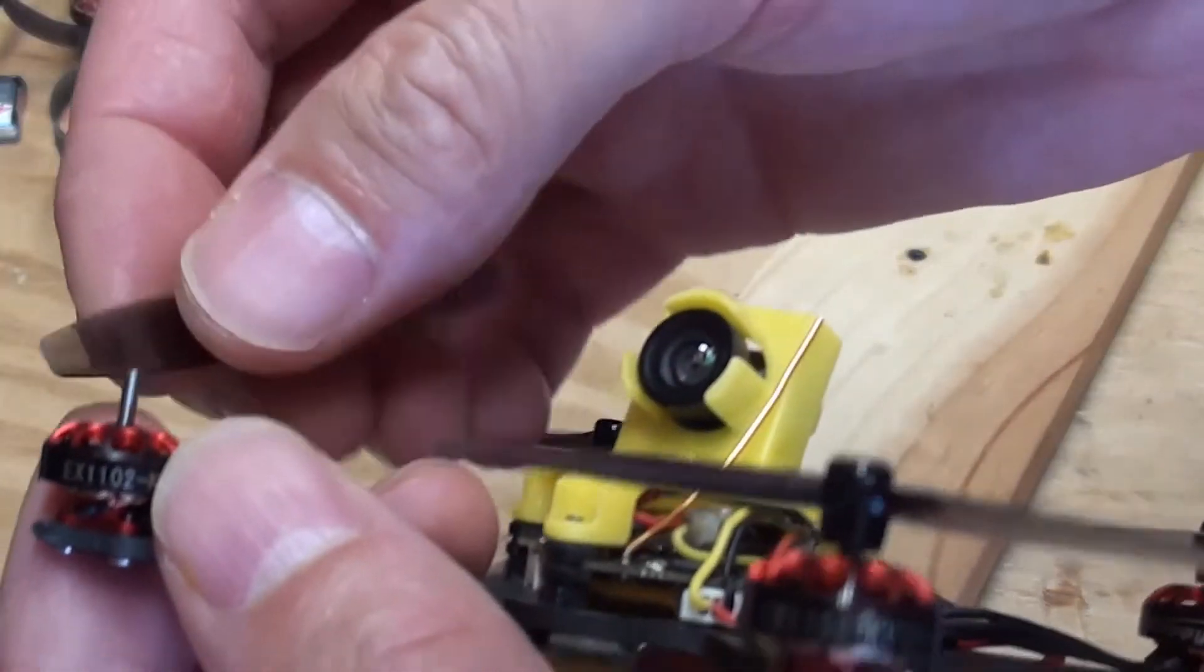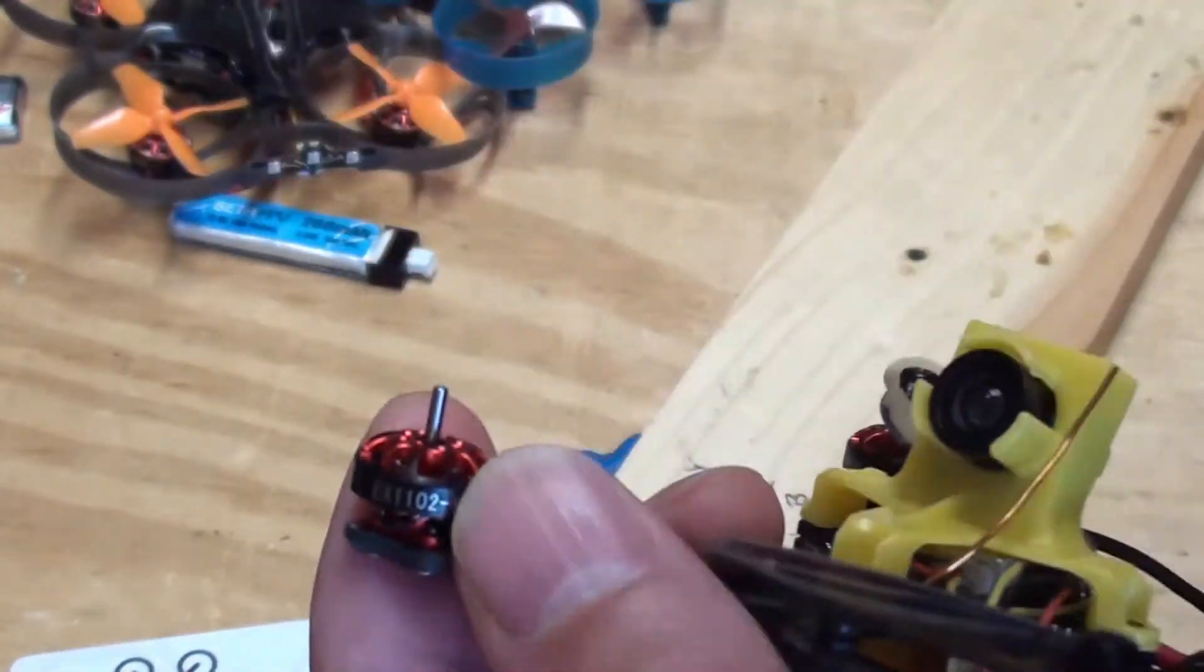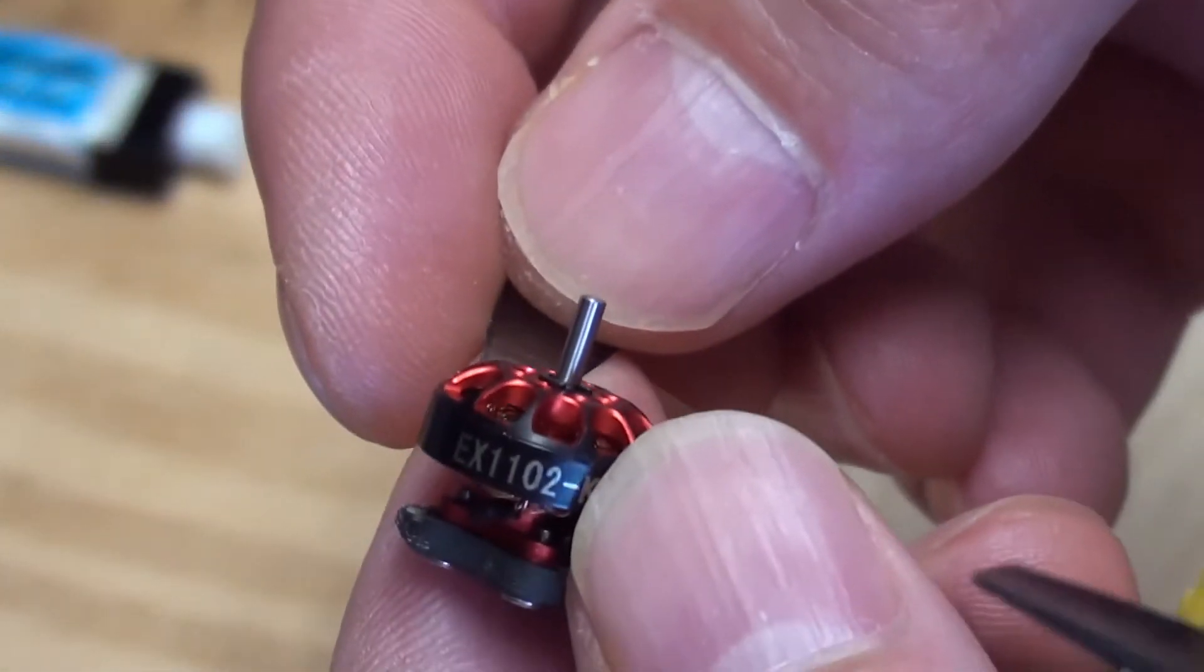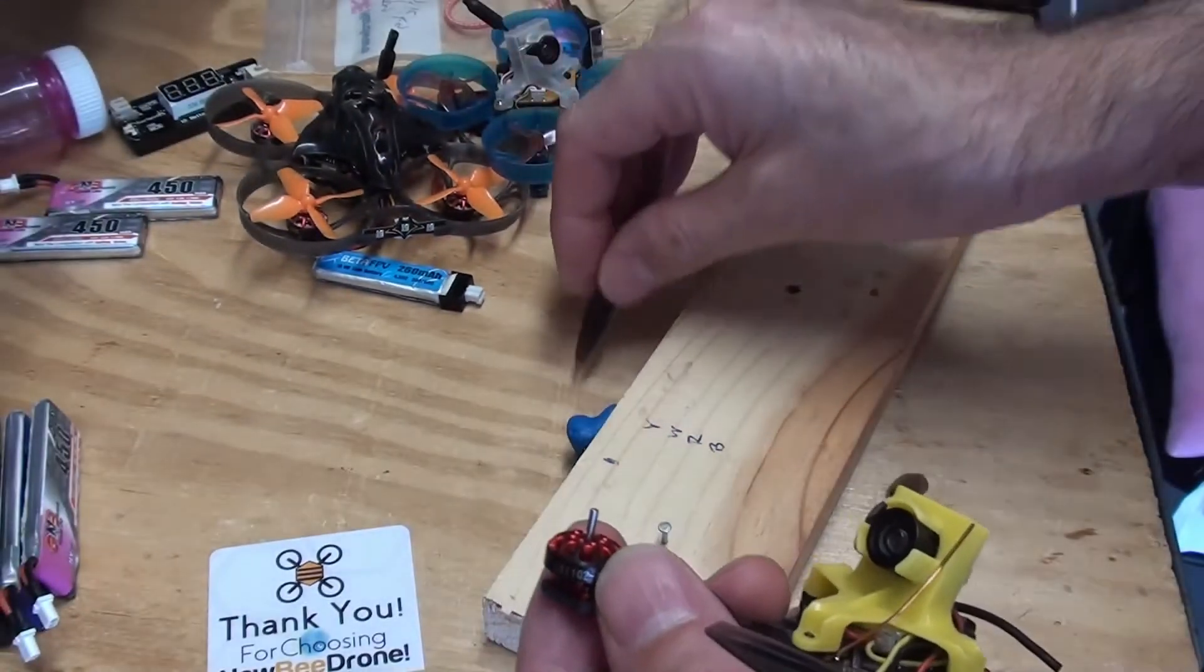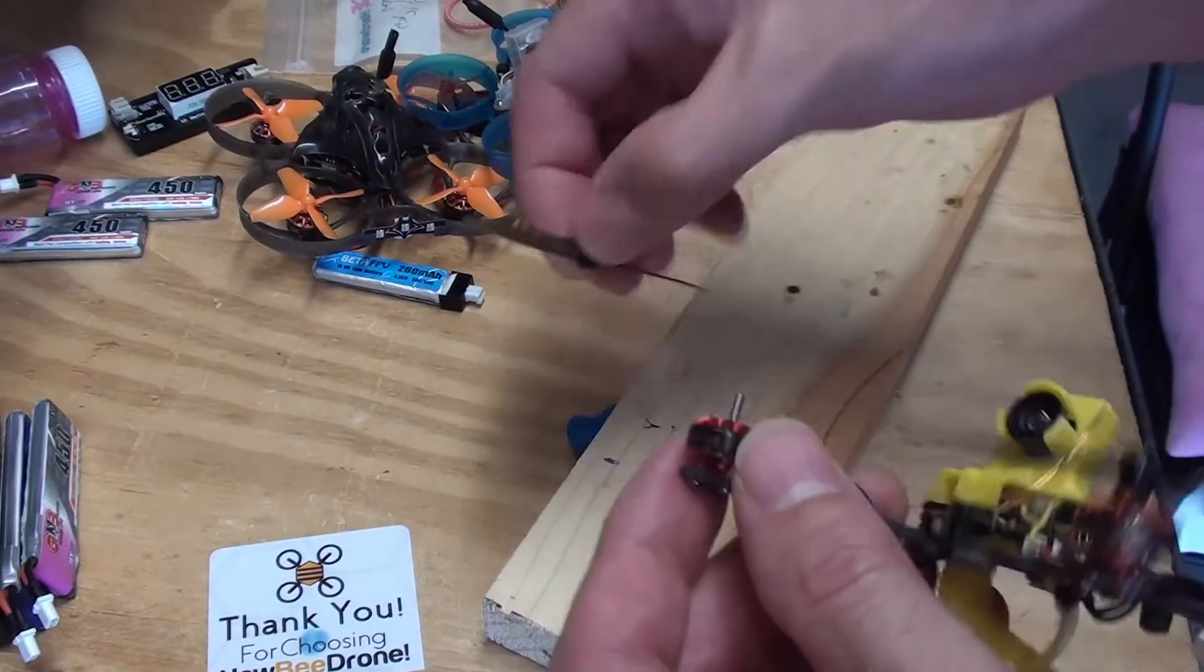This probably wouldn't happen on this particular motor because the clip here is all the way up against the bell. I don't think there's any wiggle room for it to break free, but this is how I do it anyway.